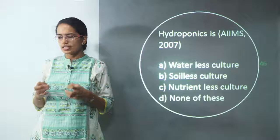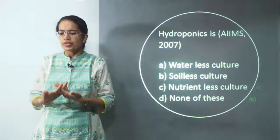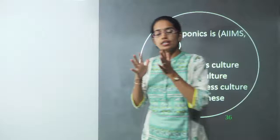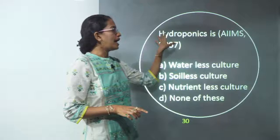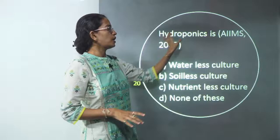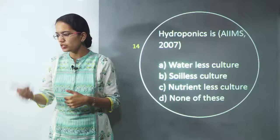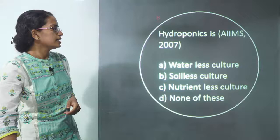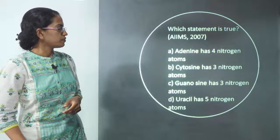What is hydroponics basically? The answer is B — soilless culture. A soilless culture is a culture that does not require soil. Hydroponics is one kind of soilless culture that occurs in liquid. You could answer it in 30 seconds — really great. Let's move on to the next question.